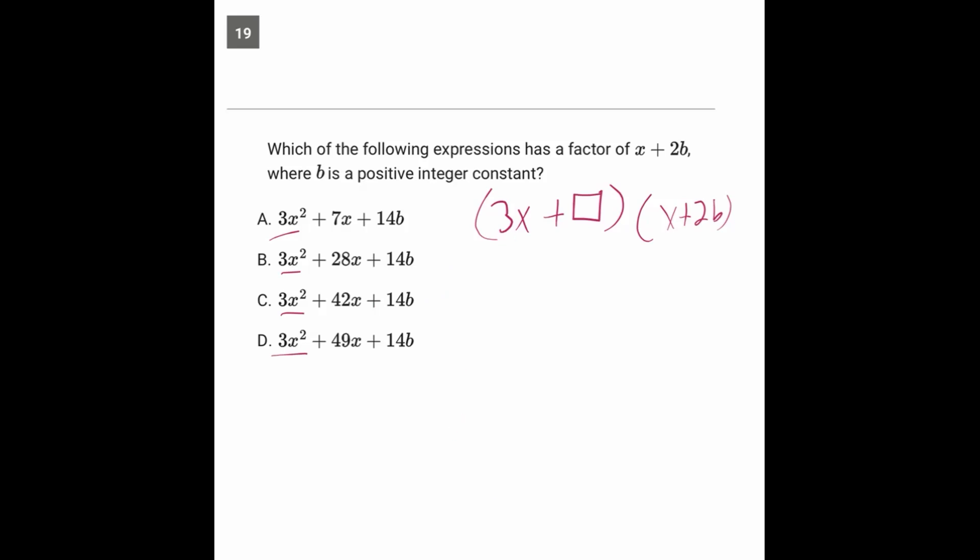Now the other thing to notice is that all the answer choices have 14b in this last spot. So there's really only one number that can go in this space here, and that's the number 7, because when you do the L of foiling these two out, now you'll get 14b.